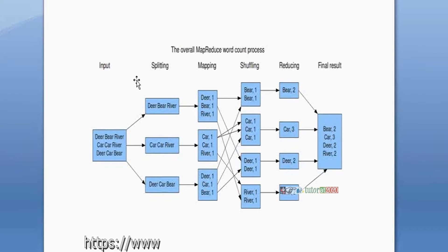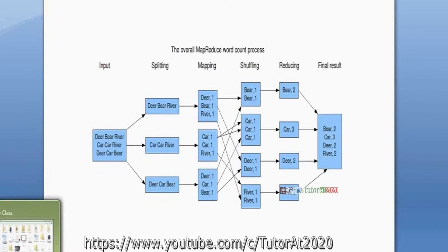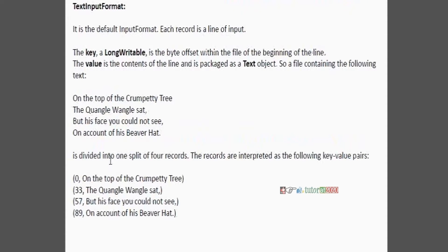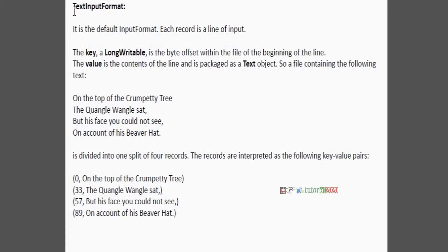Mapper reads the data from the data node by input splitting as a key-value pair. How to read the data depends on the format. We have input formats: combined file input format, whole file input format, text input format, key-value text input format, and others. By default, if you are not specifying any input format, the mapper reads the data from the data node as text input format. Then automatically keys and values are decided — the key is the byte offset, specifically a LongWritable byte offset within the file.